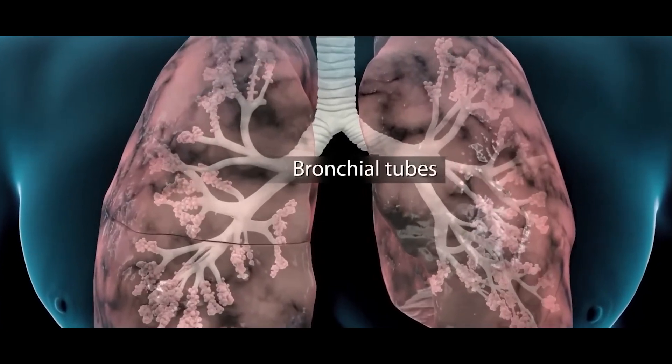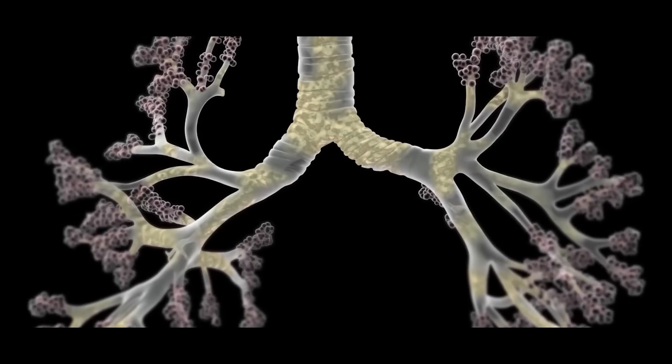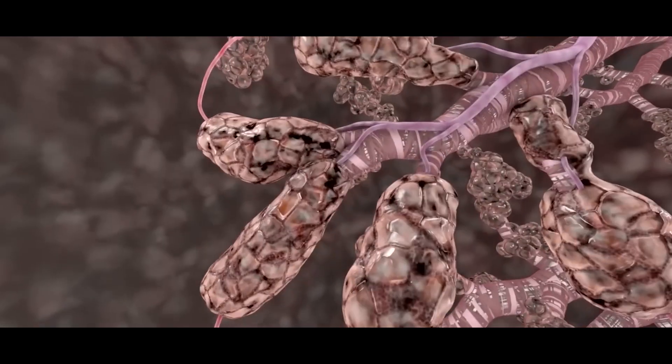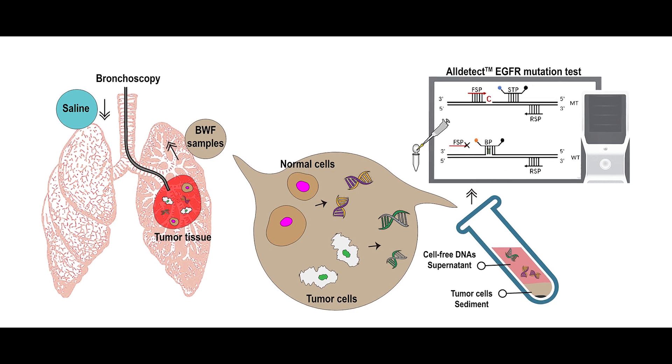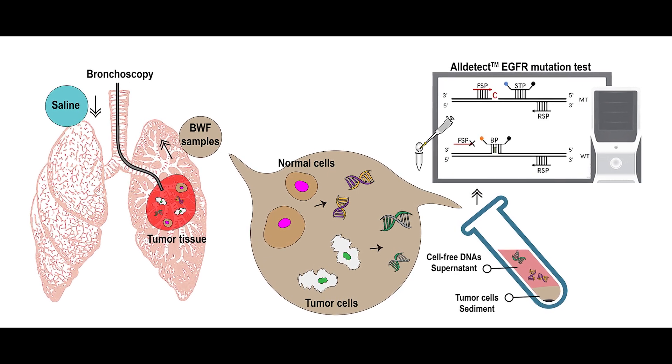What are the major indications for bronchoscopy? Major indications are infections in the lungs. Usually, when a patient has pneumonia, to find out exactly what infection is causing it, we will do bronchoscopy — we call it a bronchial wash. We collect a sample from where the infection is, send it for analysis, understand the exact cause, and treat accordingly.